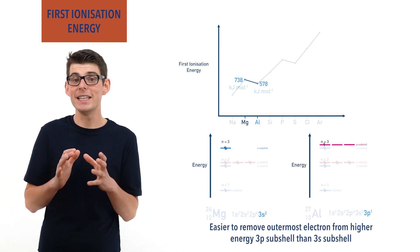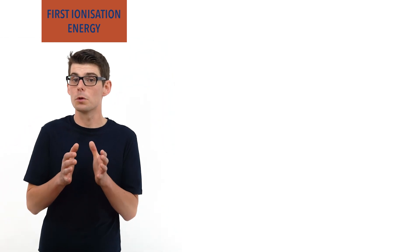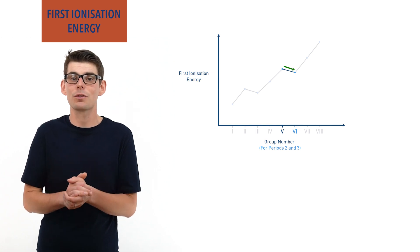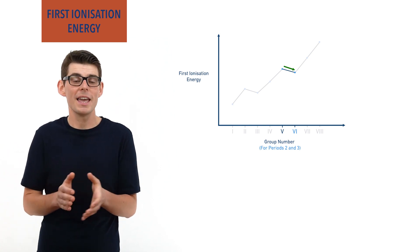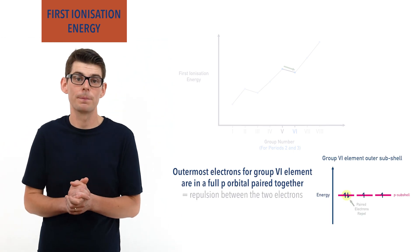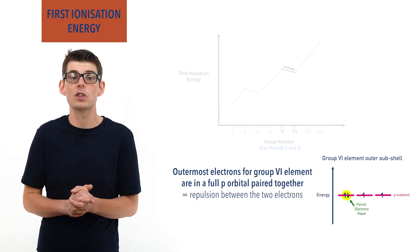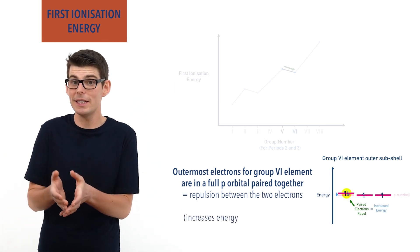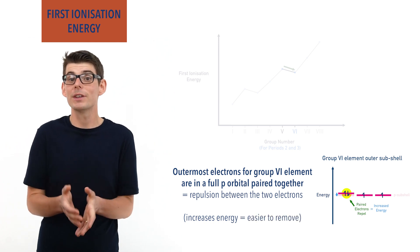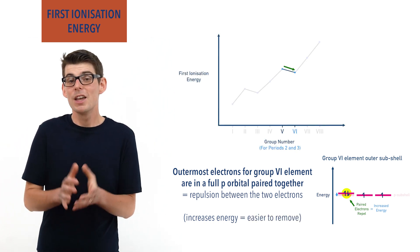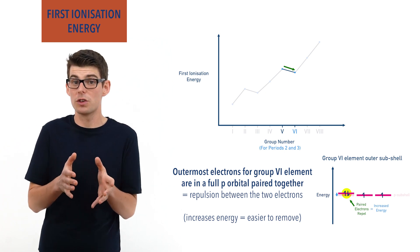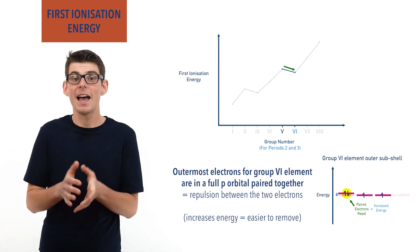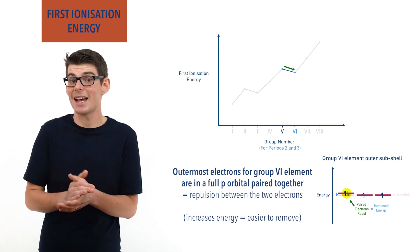There is also a decrease in first ionization energy moving from group 5 to group 6. This is because for the group 6 element, the added electron has to go into an already half-filled orbital in the p subshell, leading to repulsion. This repulsion increases the energy of the electron pair in the orbital and makes them slightly less stable, meaning less energy is needed to remove one of them from the atom, giving a lower first ionization energy. The increase in positive charge of 1+ from the nucleus isn't quite enough to overcome this effect of repulsion.